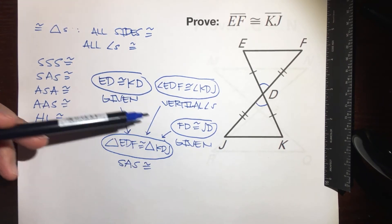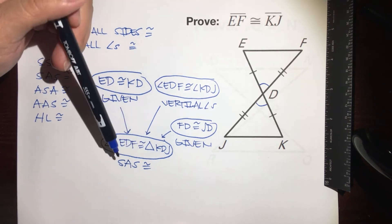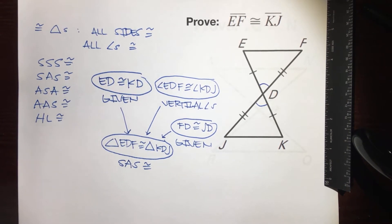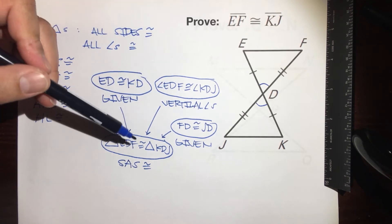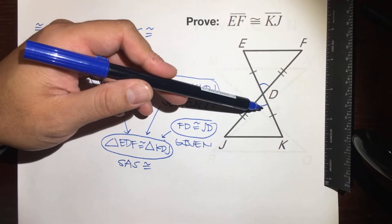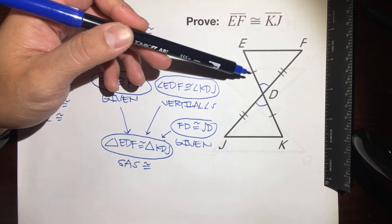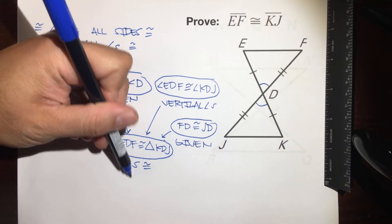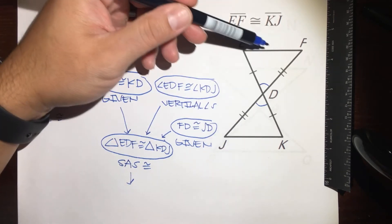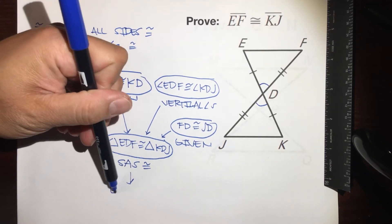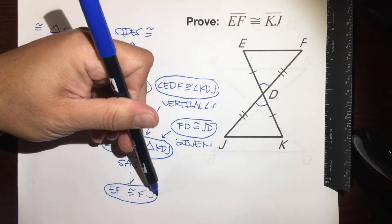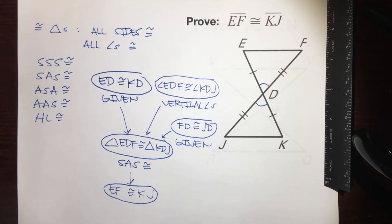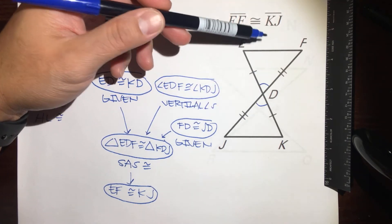You might think we wasted time because the problem said to prove the side, not the triangles. But let's look at what we know: when triangles are congruent, all sides are congruent. So if these two triangles are congruent, all sides have to be congruent. So now we can say that because the two triangles are congruent, specifically EF is congruent to KJ.